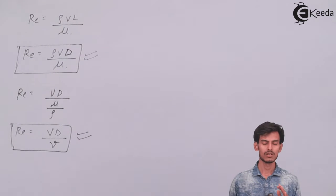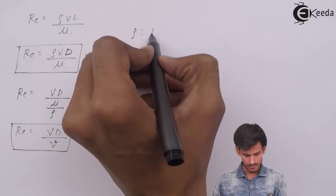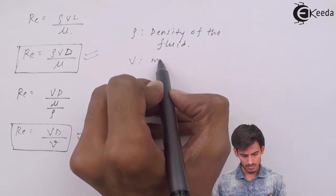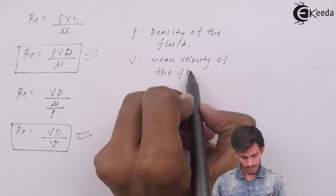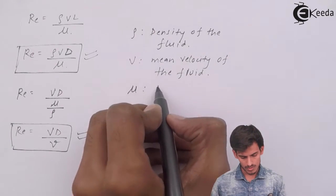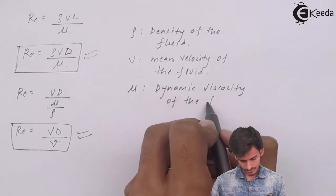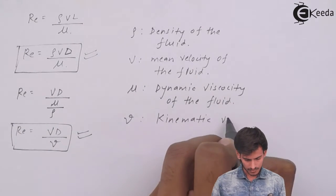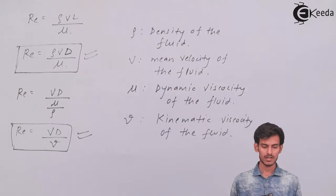I'll write down what μ is, what ν is, what D is and what v is.